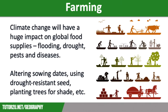The first way that people are having to adapt is to cope with changes to farming. Scientists predict that climate change will have a huge impact on food supply across the globe. More frequent and intense extreme weather events such as flooding and droughts, and the increase in pests and diseases, will make farming very difficult. Farmers may see their yields drop, so they need to adapt to these changes.